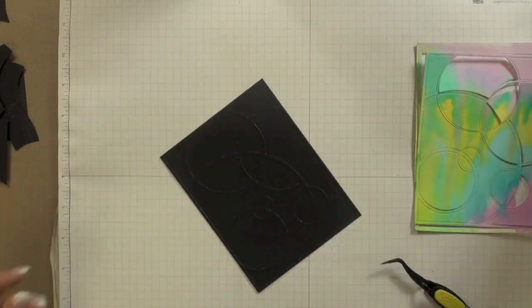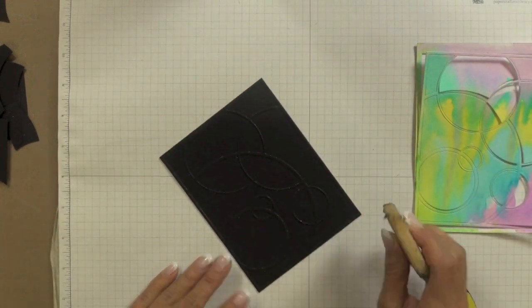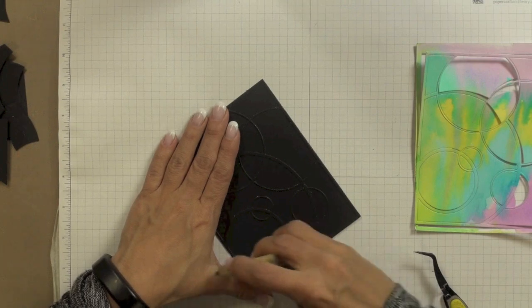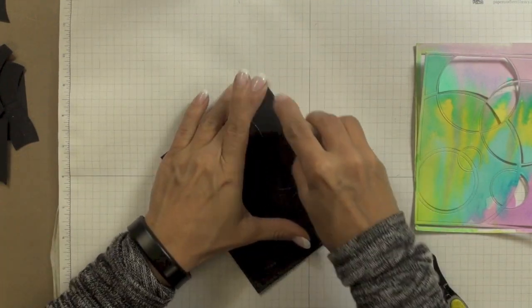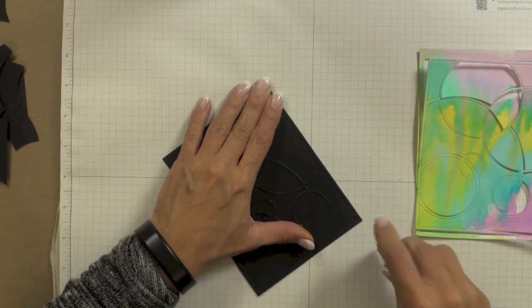Now because the adhesive is in the form of little dots when you pull your die cut piece off you will get some dots that end up in areas where you don't want and that's why I simply took my adhesive remover and I just started removing any of those excess dots that I could see.